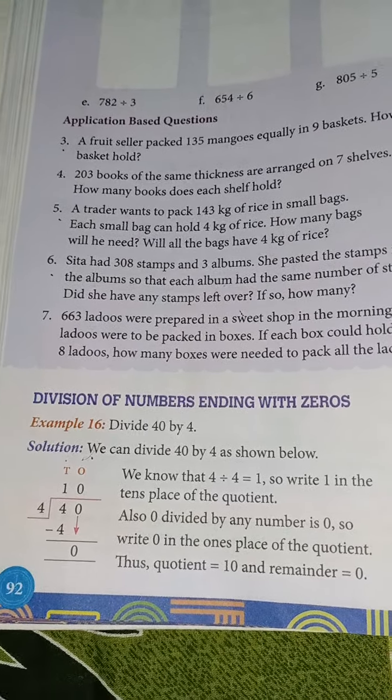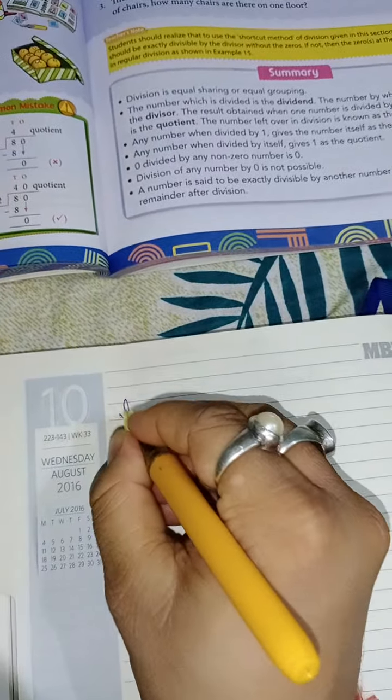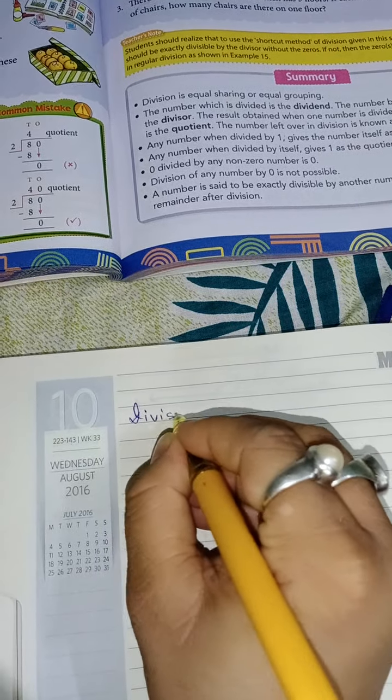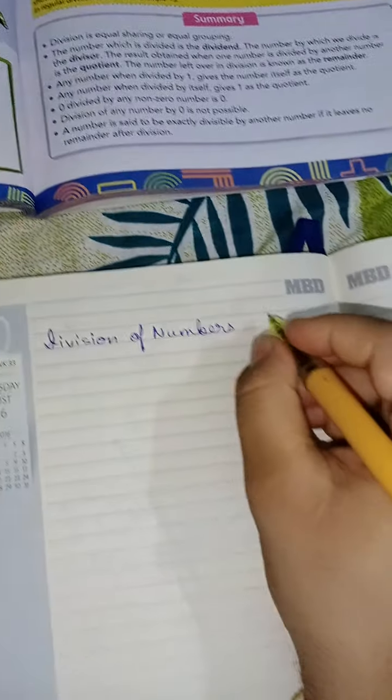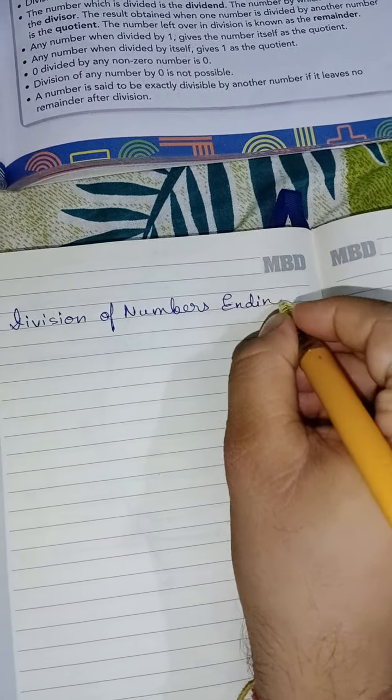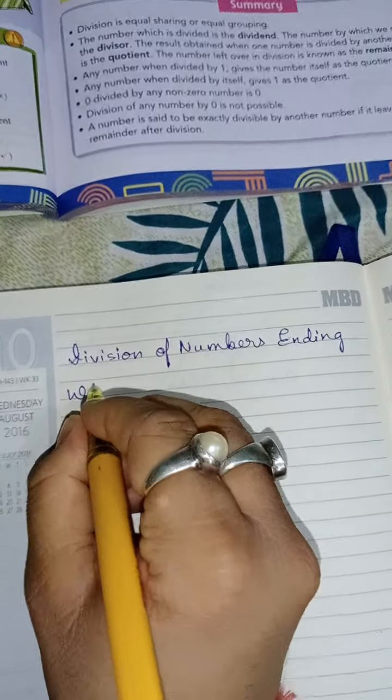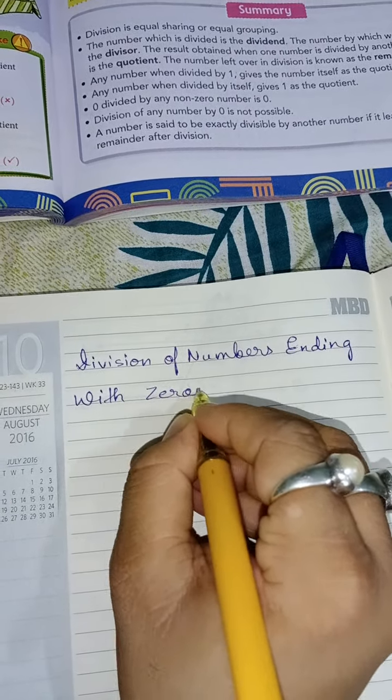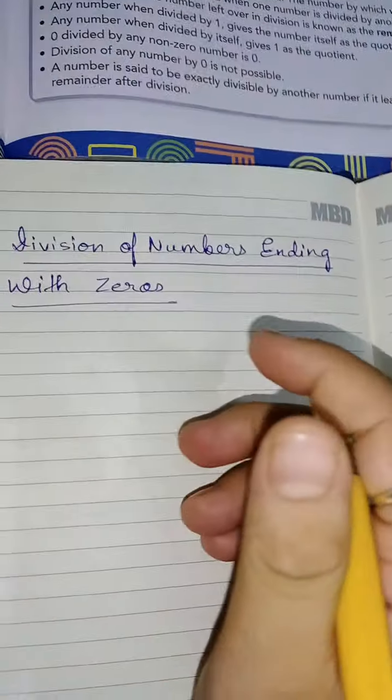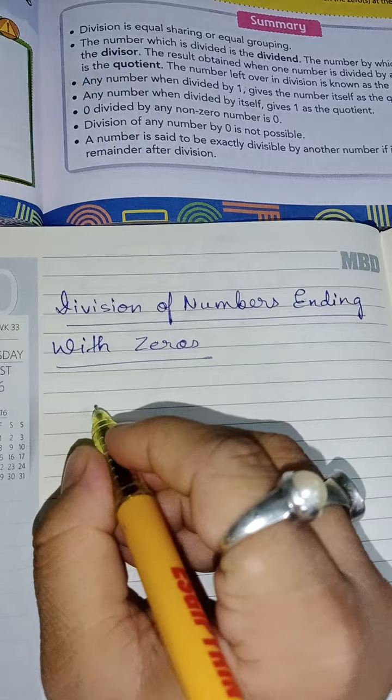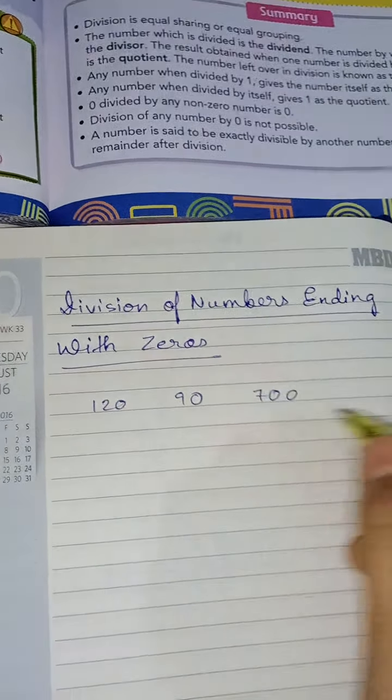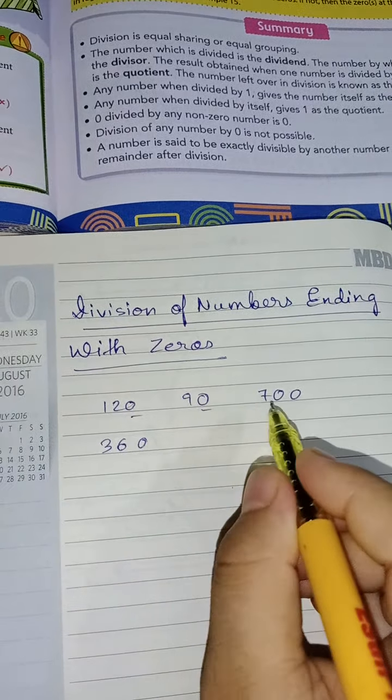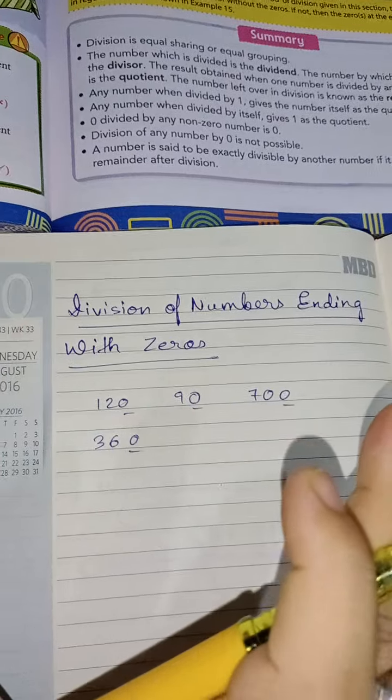Now the topic is division of numbers ending with zeros. It is not like we cannot divide these numbers like we normally do. I am writing the topic first: division of numbers ending with zeros. Division of numbers ending with zero means any numbers that end with zero, for example, numbers like 120 or 90, 700, 360. All these are numbers which have zero at the unit place.